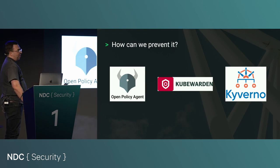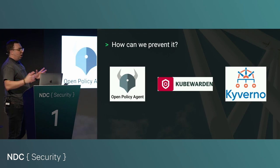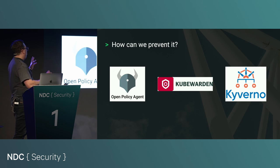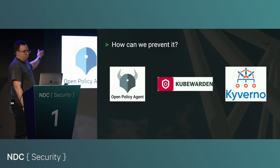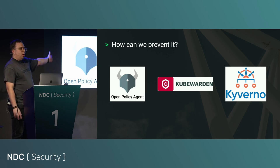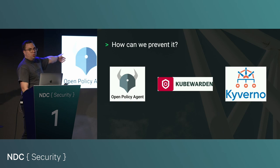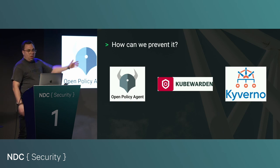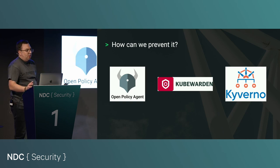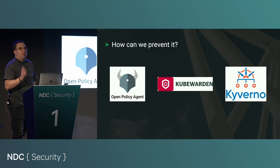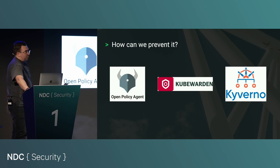Tools to prevent this at scale include OPA Gatekeeper — which we touched on — but also Kubewarden or Kyverno. They're all essentially doing the same thing: enforcing policies at the API level.